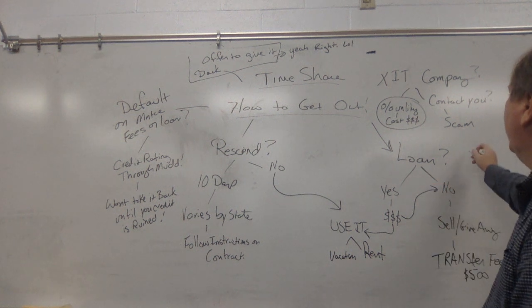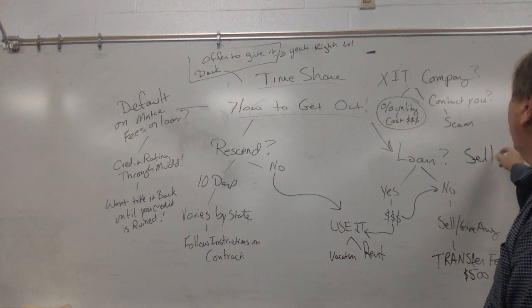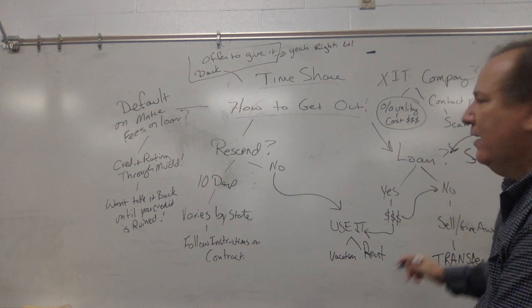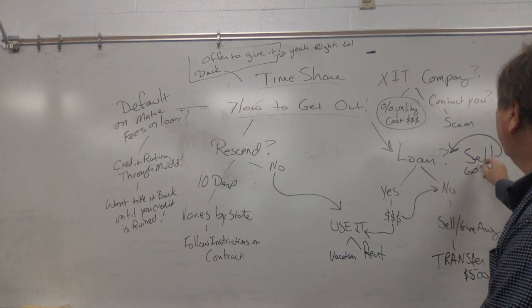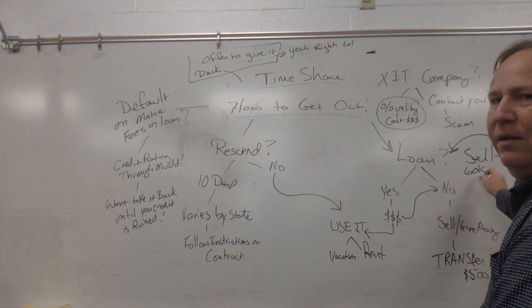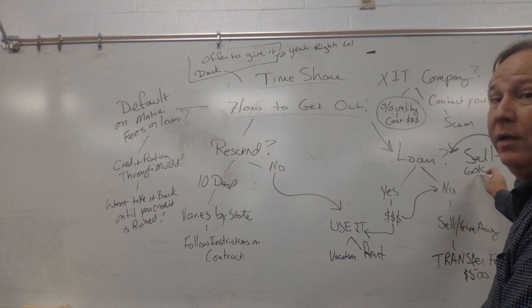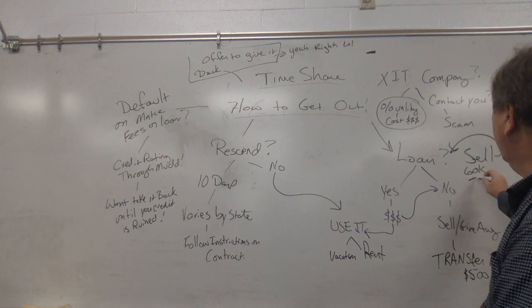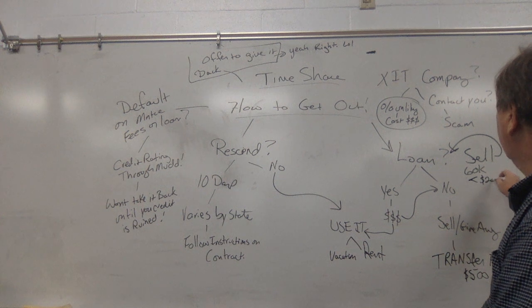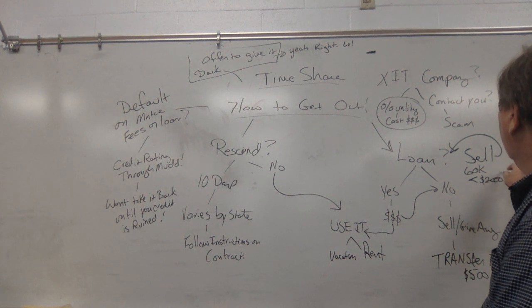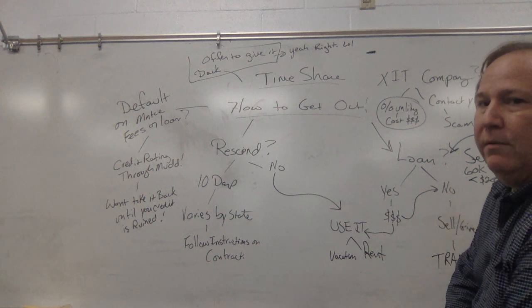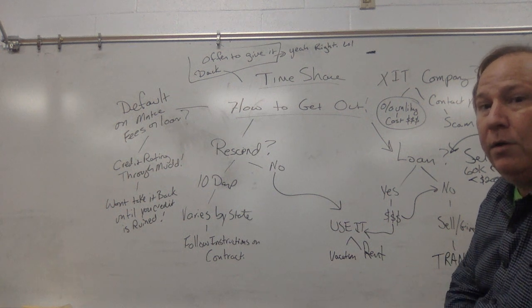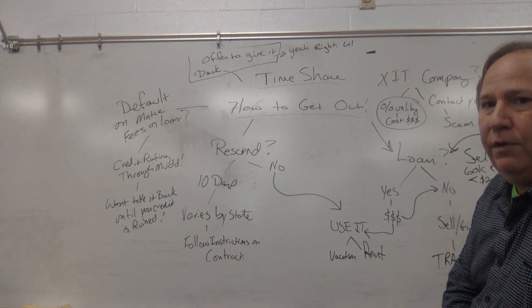Now you might say, well, I do owe money on it, but I'm going to sell it and pay off this loan. Well, the reason you can't do that is because often your loan is $60,000, but the value or what someone is willing to pay for your timeshare is less than $2,000. So unless you're going to go ahead and fork up that $58,000 difference and pay your loan off, then you can't transfer your timeshare until the loan's paid off.